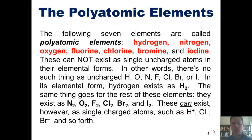But first, I want to teach you this principle of polyatomic elements. The following seven elements are called polyatomic elements: hydrogen, nitrogen, oxygen, fluorine, chlorine, bromine, and iodine. You're welcome to look at where they lie on the periodic table, just so that you can memorize which ones they are.